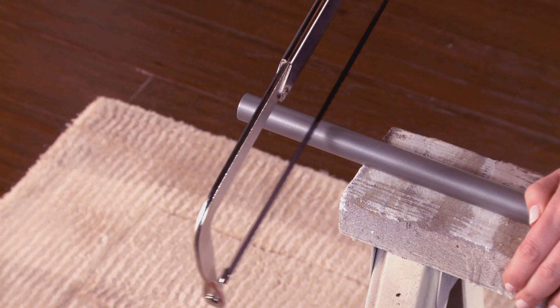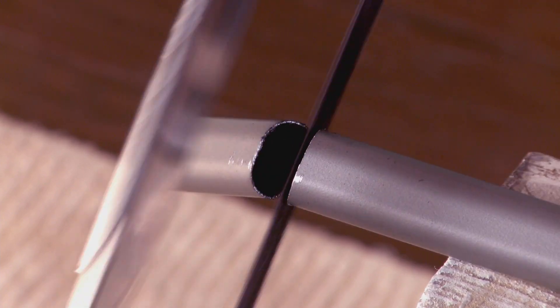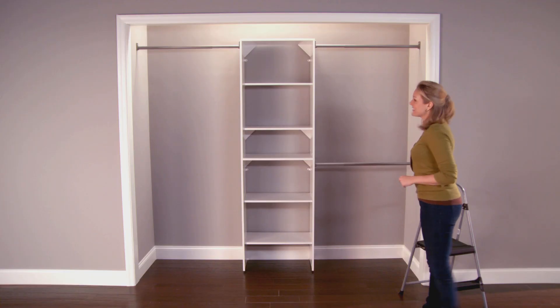For smaller closets, the hang rods may need to be cut. Measure the length and cut the rods on the end without the hole. Now you have a closet that will help you stay organized.